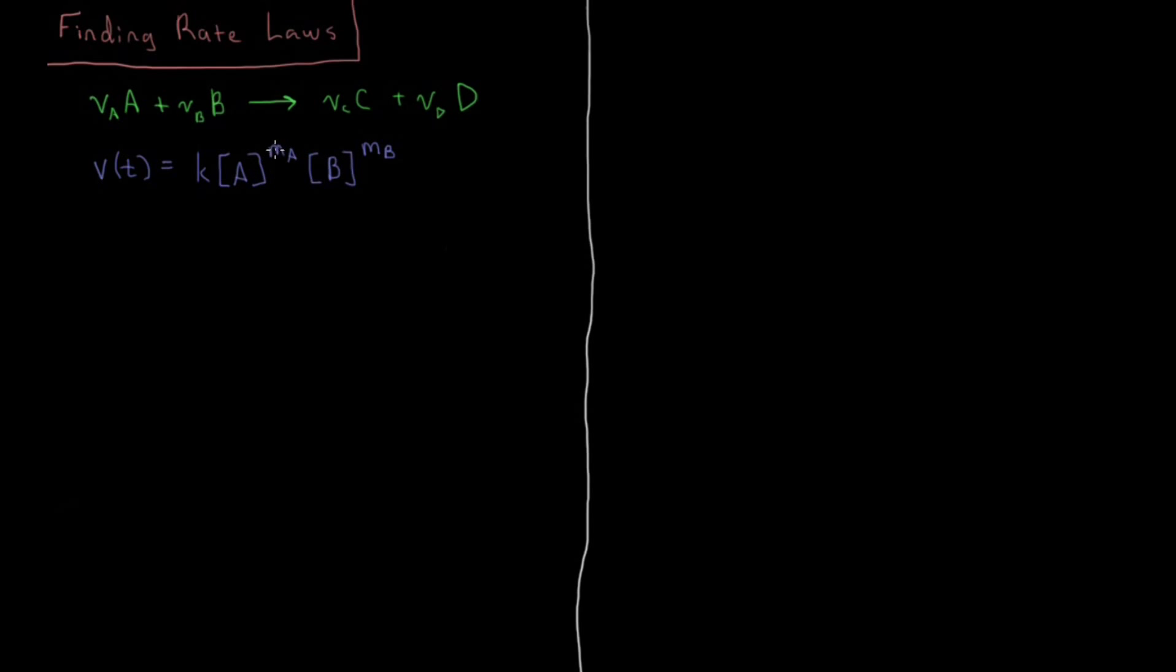These have to be determined empirically, which means just by measurement. There's no way to know what MA and MB are until you actually do the experiment. So if you have some data on reaction rates, how can you use that data to determine what the rate law is, which we usually just mean is how do we determine what these exponents are on the orders for A and B.